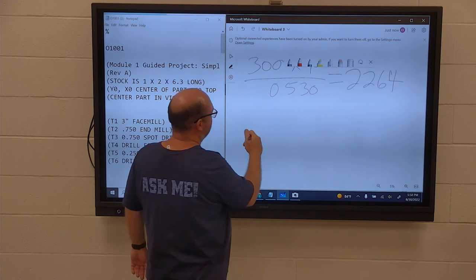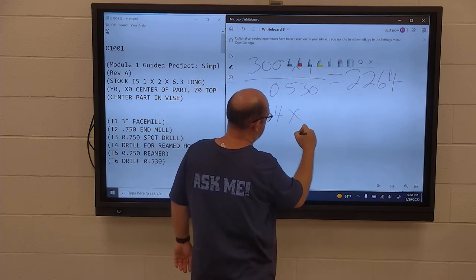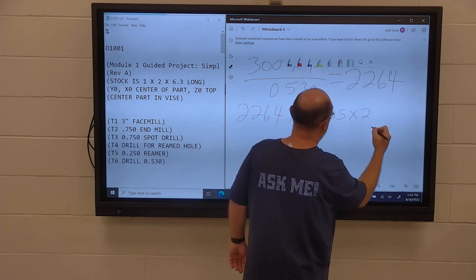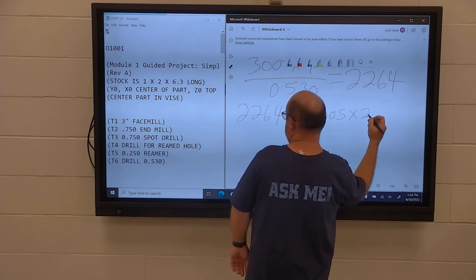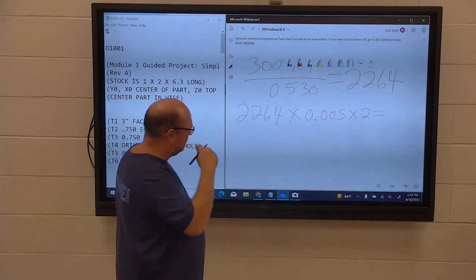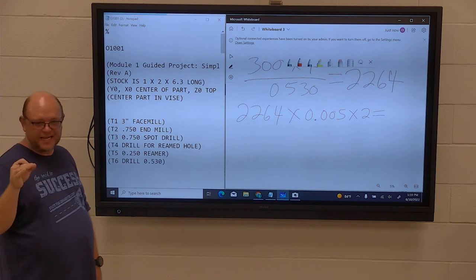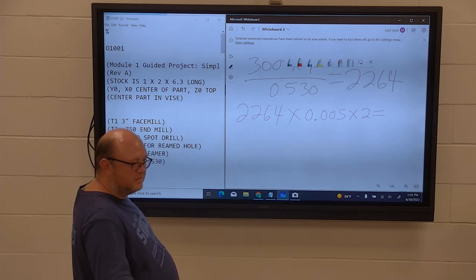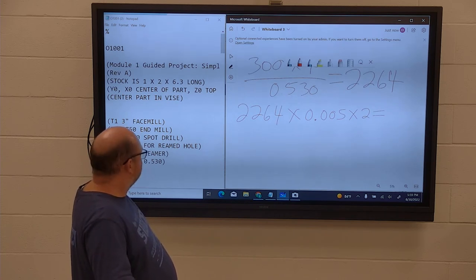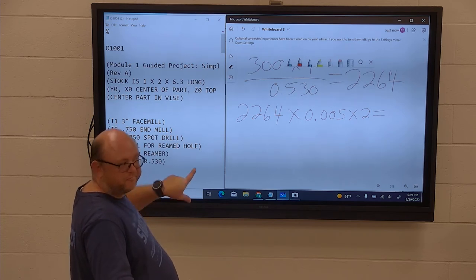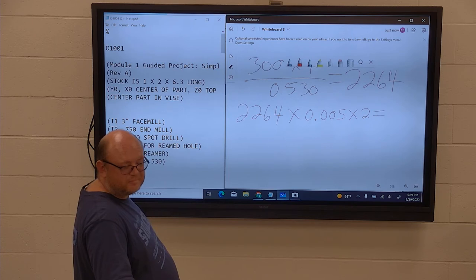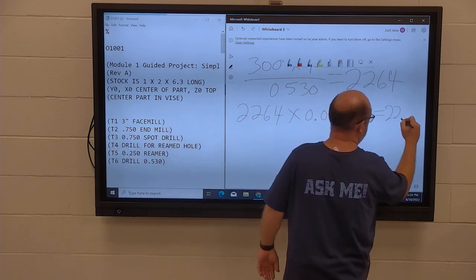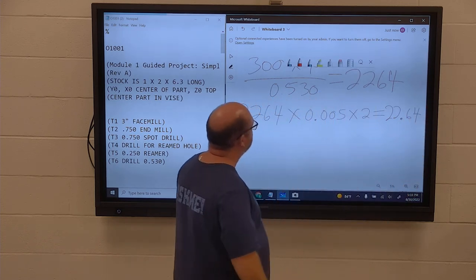And then drill bit feed rate. 2,264. What's my chip load? 5 thousandths for 250 drill bit. You agree? Yeah. So then every drill bit, most drill bits have two flutes. So what's that work out to? If I write it in there, 2,264 times 5 thousandths times 2.